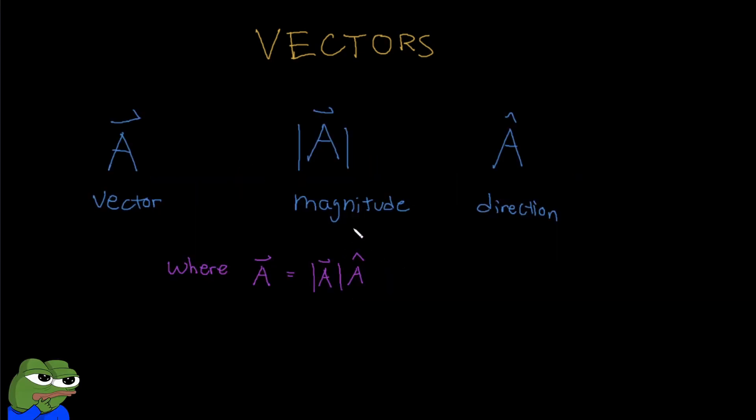Mathematically, this is how we represent vectors. For example, if we want to work with vector A, we put a little arrow on top of it to denote that it's a vector quantity, meaning it has both magnitude and direction. If you want to just look at the magnitude of A, you put two little lines like this, and it tells you that you're looking for only the magnitude of A. Now, if you want to find the direction of A, you put a little hat on top of it. And so this is the relationship. Again, our vector A has two parts, the magnitude and direction, and you just multiply them with each other.